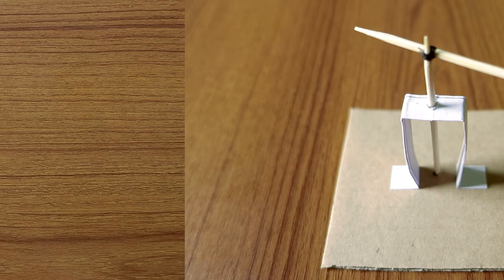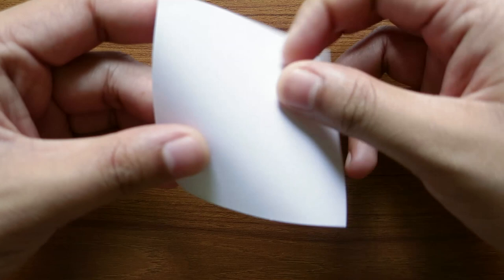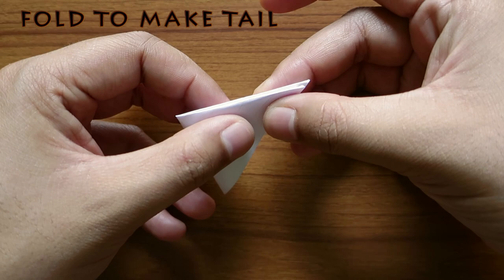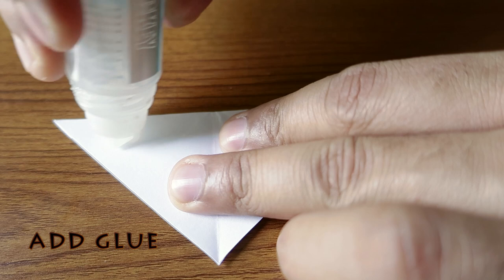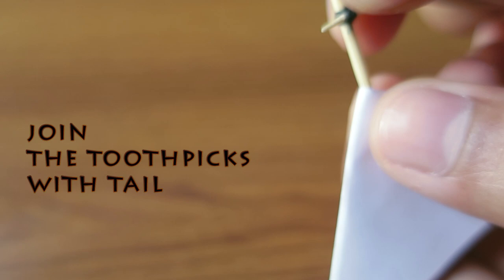Next take the square paper. Fold to make tail. Add glue. Join the toothpicks with tail. Make it dry.